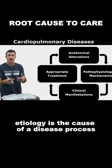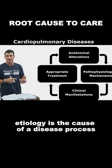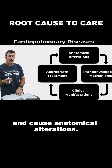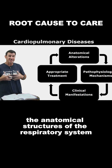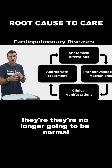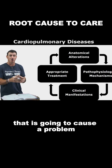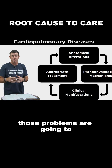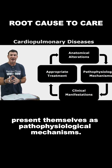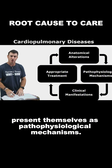Etiology is the cause of a disease process. That etiology is going to lead to and cause anatomical alterations — that means the anatomical structures of the respiratory system are going to become altered, no longer normal. That is going to cause a problem, and those problems are going to present themselves as pathophysiological mechanisms.